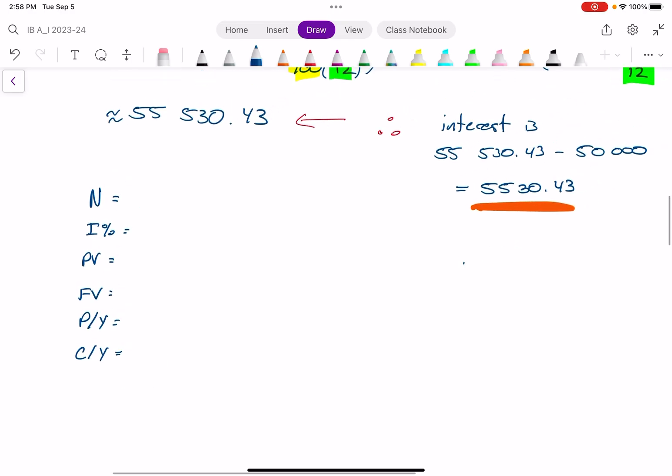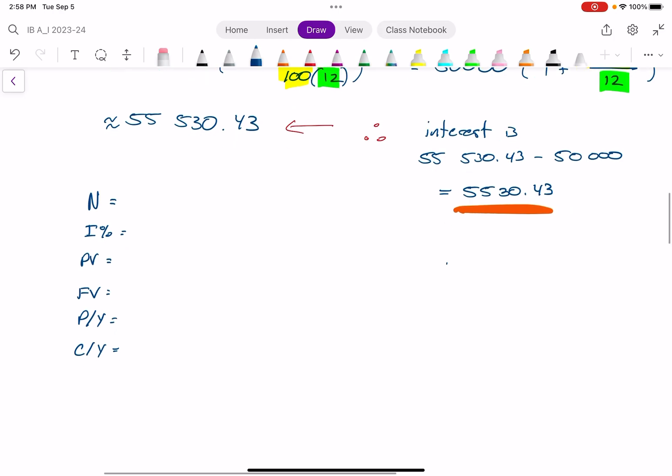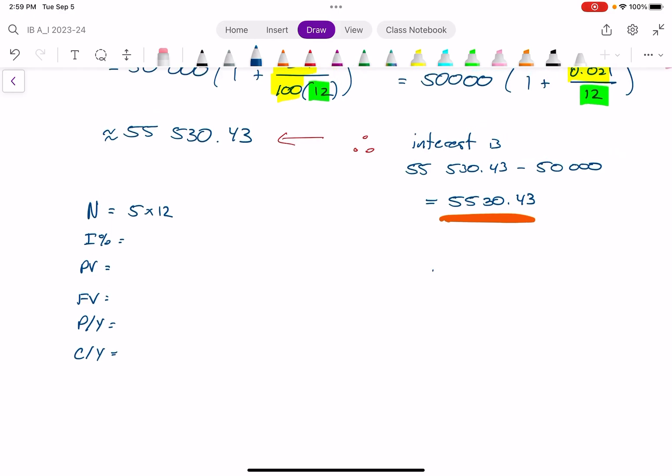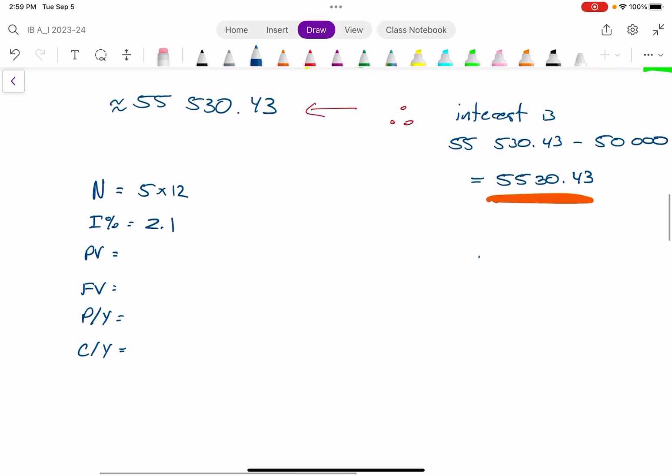Okay, so in this case, n is the number of compounding periods in total over the time. So it's five years times 12 compounding periods a year. So it's five times 12 or just 60 you can type in. The I percent, that's the interest as a percent. And so it's just 2.1. The present value, that's what we're starting with.